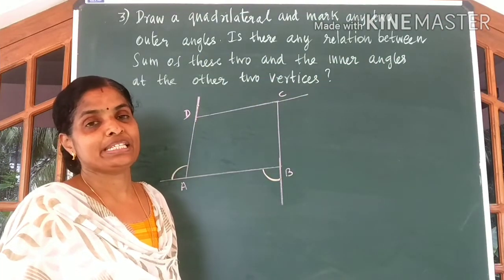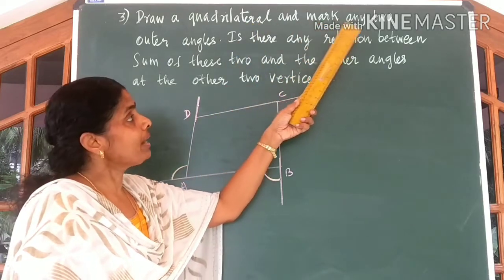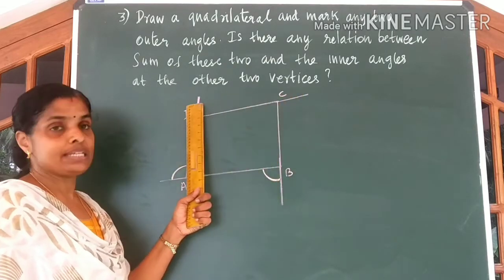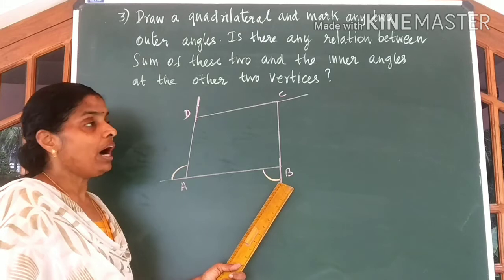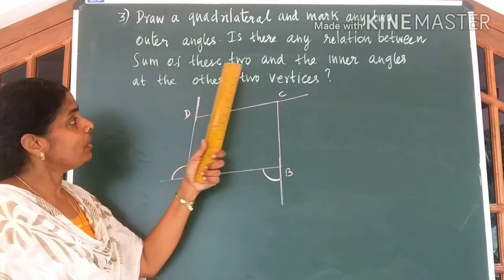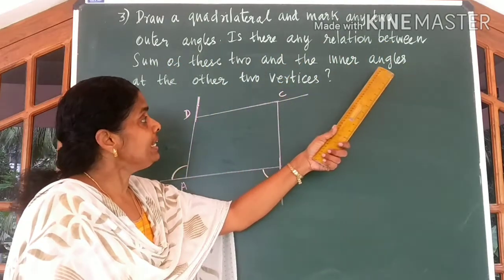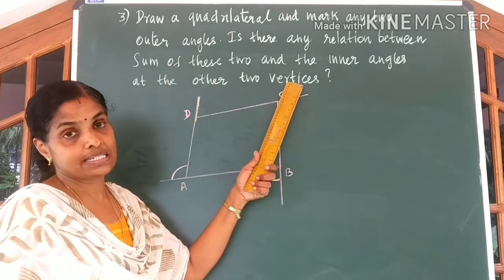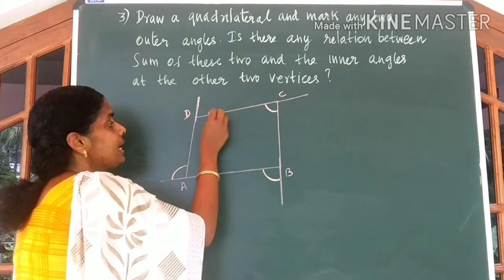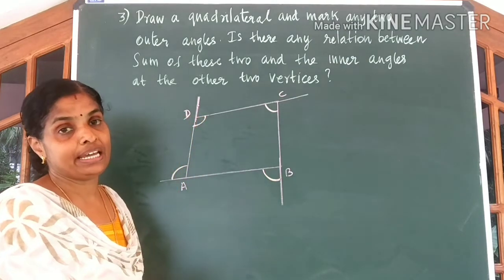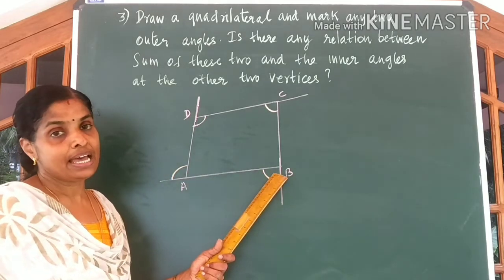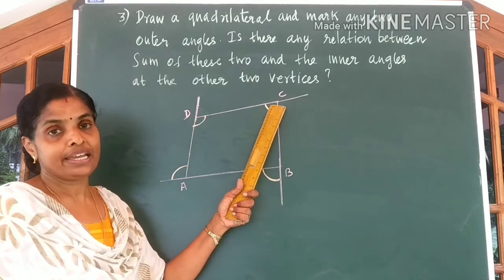Come to the third question. Draw a quadrilateral and mark any two outer angles. I have drawn quadrilateral A, B, C, D and marked two outer angles. The question is: is there any relation between the sum of these two outer angles and the inner angles at the other two vertices, C and D? We are going to find out that relation.